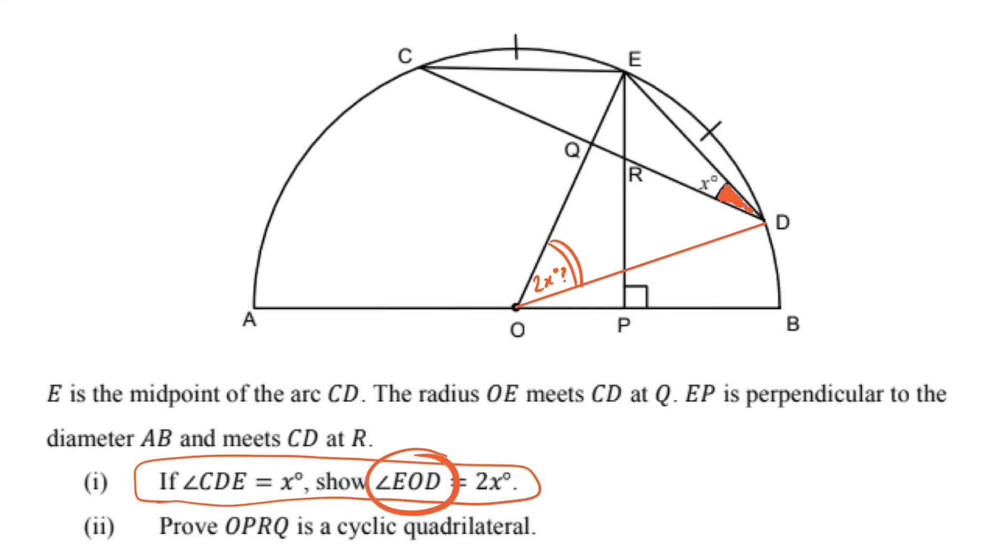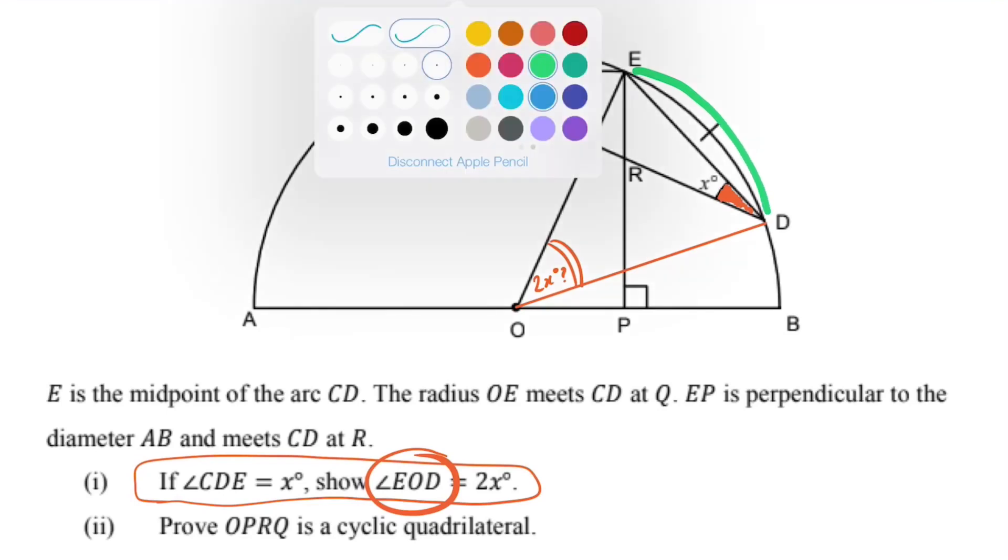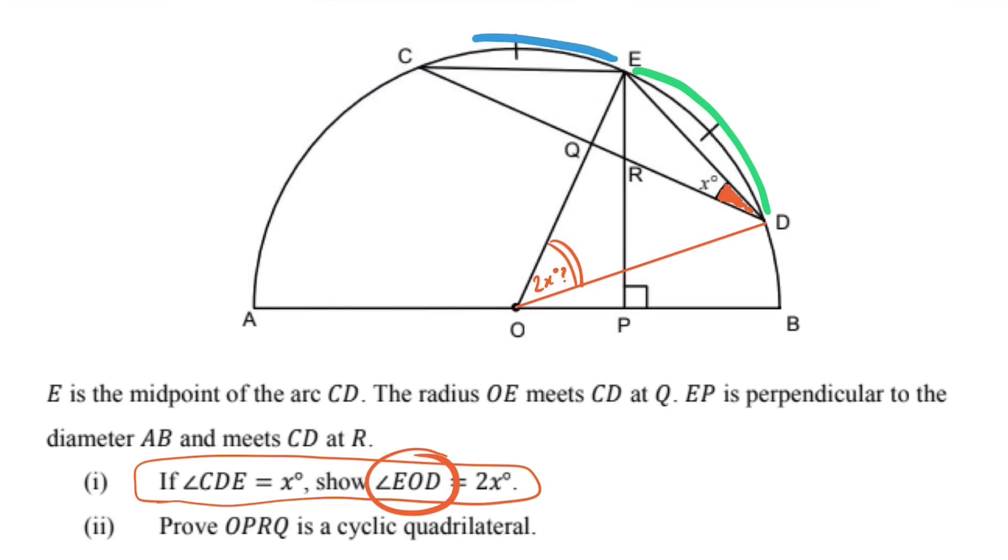but the problem is, my angle at the circumference EDC, or CDE rather, it's not standing on the same arc. These guys are standing on different arcs. So angle EOD, that's standing on arc DE over here, whereas the original angle CDE, it's standing on this arc.